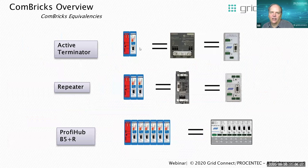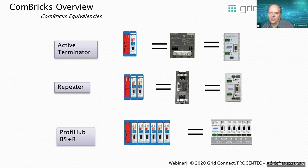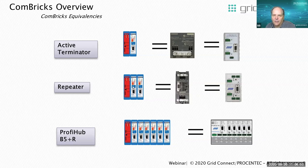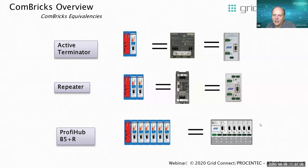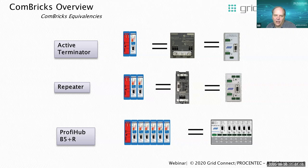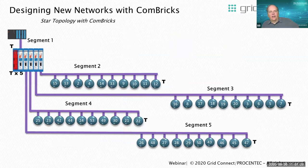For fiber, Combricks supports star, tree, line, and ring topologies, on both multimode and single-mode fiber — single mode giving greater distances. In terms of equivalencies, if you have an active terminator in your network, you can replace it with a single head station and a single module. To replace a standard repeater, you need two segment modules — one equivalent to the top of the repeater and one to the bottom. To replace a ProfiHub B5R (five channels plus main, six total), you need six segment modules on your Combricks.